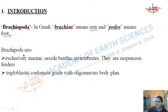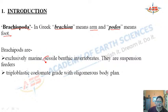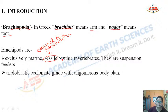The characteristic features of Brachiopoda are that they are exclusively marine, sessile benthic invertebrates, and suspension feeders. They are triploblastic coelomate grade with an oligomerous body plan. Sessile means they are attached to the substrate, and benthic means they are present on the sea bottom.